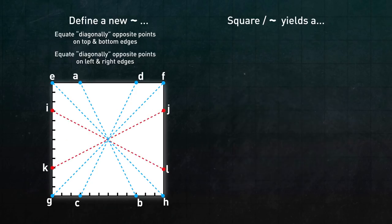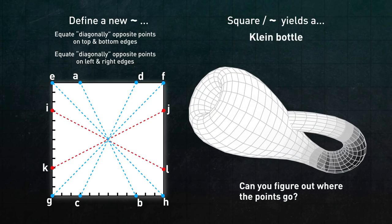If you throw in diagonally opposite points on the left and right edges on top of that, you get a Klein bottle. This list goes on and on, and you can use base shapes other than a square. If you've never seen this before, I encourage you to play around with the options, because it's pretty fun.